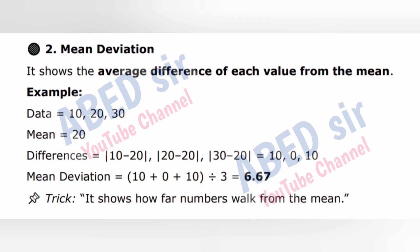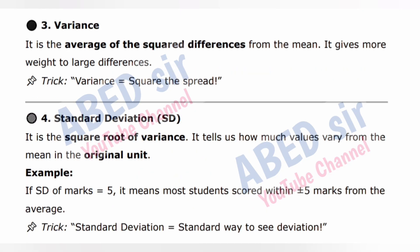2. Mean deviation — shows the average difference of each value from the mean. Example: Data = 10, 20, 30. Mean = 20. Differences = |10−20|, |20−20|, |30−20| = 10, 0, 10. Mean deviation = (10+0+10)/3 = 6.67. Trick: it shows how far numbers walk from the mean. 3. Variance — the average of the squared differences from the mean; it gives more weight to large differences. Trick: variance = square the spread.